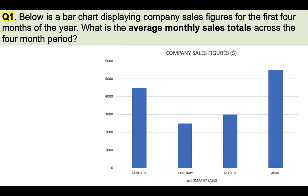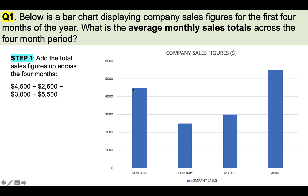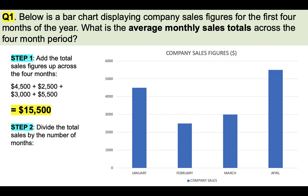How do we tackle this question and find the average monthly sales totals? We need to follow two very simple steps. Step one: add the total sales figures up across the four months. In this case, it's $4,500 for January, $2,500 for February, $3,000 for March, and $5,500 for April. If we add all of those up, we get $15,500. And to get the average, step two: divide the total sales by the number of months — $15,500 divided by four — and the correct answer is $3,875.